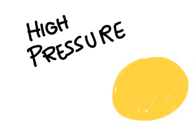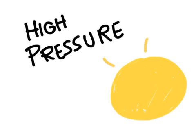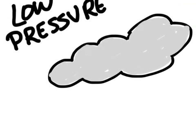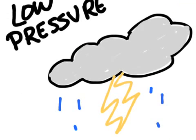This allows us to predict the weather. High pressure means we're going to have nice sunny weather, whereas low pressure, or falling pressure, means it's going to be rainy and cloudy. And that's how a barometer works.